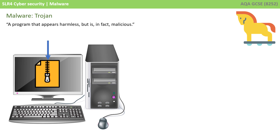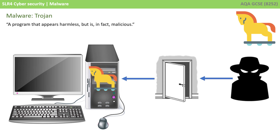It may be tempting to, for example, download a game from an untrusted site, possibly because they're offering it for free. You download the game and indeed the game installs on your PC. However, along with your download as you install it, comes a trojan which silently installs itself in the background and sits on your device. The trojan has now installed what is known as a backdoor into your computer system — a little program that allows an external hacker to bypass your computer security.